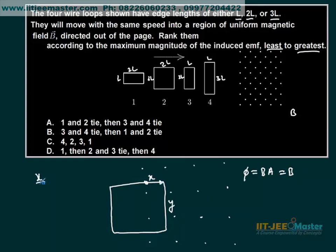And this x is increasing with a rate dx by dt, that is the speed of the loop. This is the speed of the loop towards the magnetic field. So you can see that flux will be B times x times y.